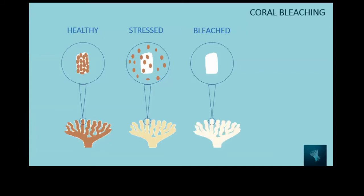Normally, a healthy coral looks brown, and its color comes from the symbionts distributed in the coral tissue. A coral that is brown has brown symbionts; a coral that looks green has green symbionts. If a coral starts to get stressed, these symbionts will no longer be beneficial — they start producing toxins and are not conducting photosynthesis efficiently anymore. So the coral will expel the symbionts.